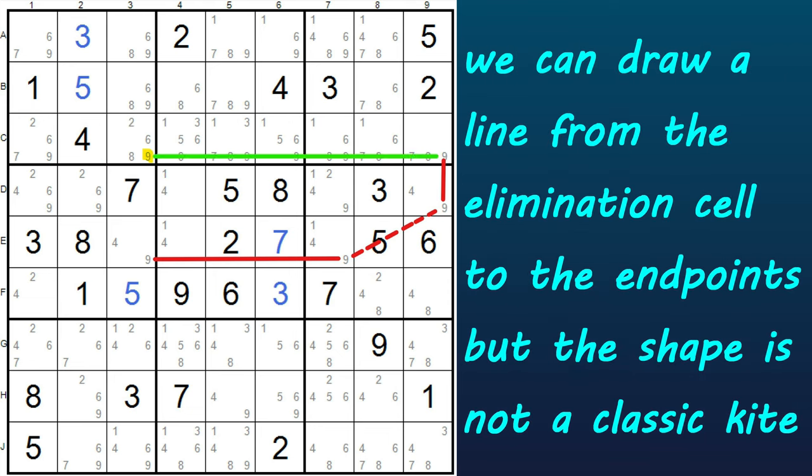If I draw a line from this cell to the endpoints, you can see it's not kite-shaped like the first example, which is why some people will say this is a turbofish. But it works just like a two-string kite, with the 9s meeting in the same block, so let's say it can be called both.